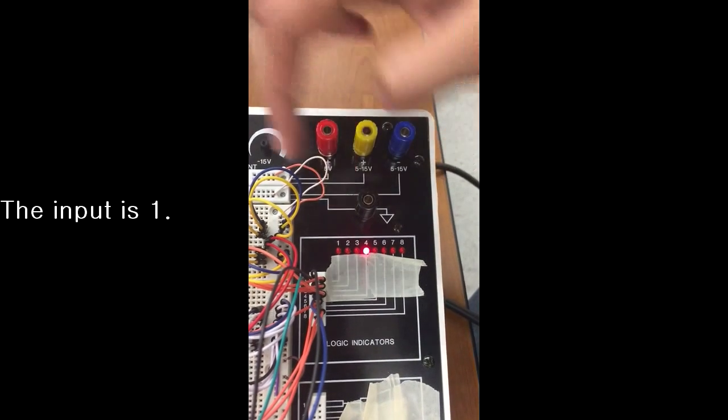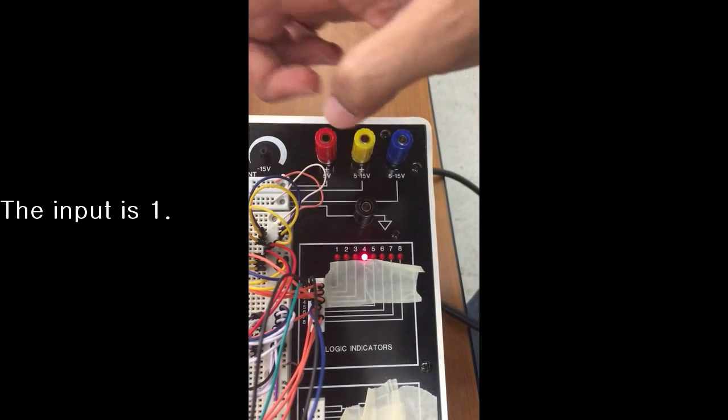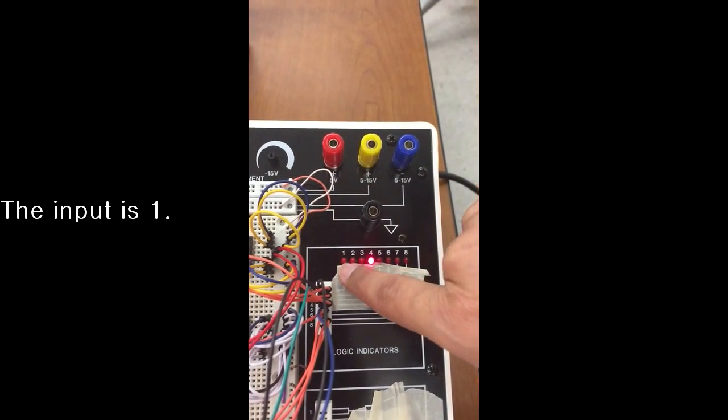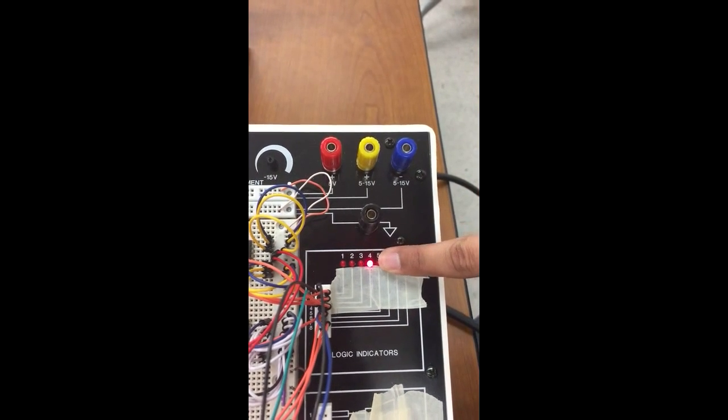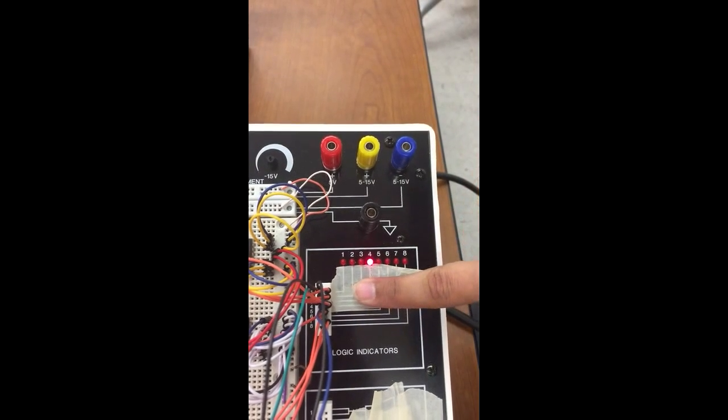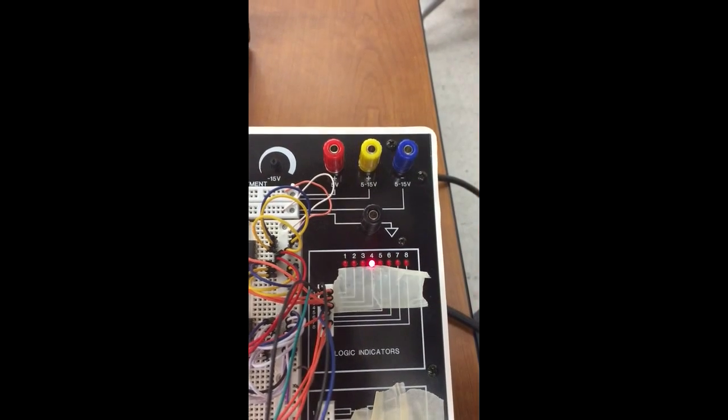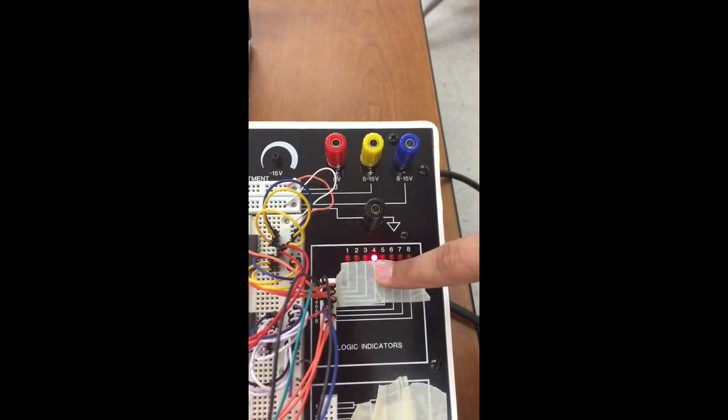By blocking the LED we sent a signal to the up counter to increase the count by 1. As you can see this is 0, 0, 0, 1. When you decode it from binary to decimal it's 1. So blocking the LED once has up counted the counter by 1.